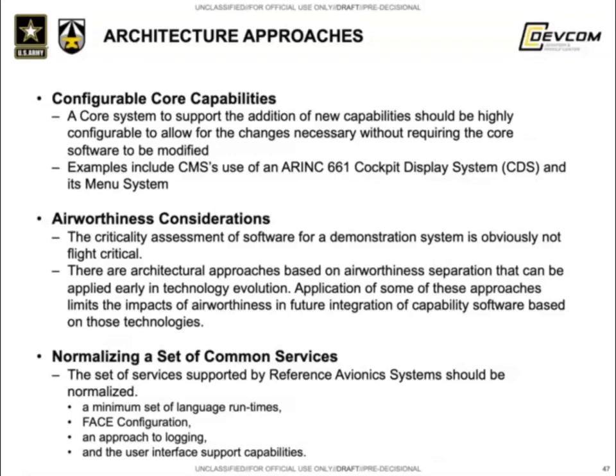Some of the other architectural approaches to consider, including in a family of systems, include configurable core capabilities that adopt to the deployment of new capabilities without the need to recompile or requalify them. This is particularly of interest when a system supports mixed design assurance level capabilities. Core system components can be built to support higher criticality capabilities and simply be configured to support new lower criticality capabilities as they're added. This leads directly to the airworthiness considerations and the patterns for separation of software criticality throughout the family of systems.